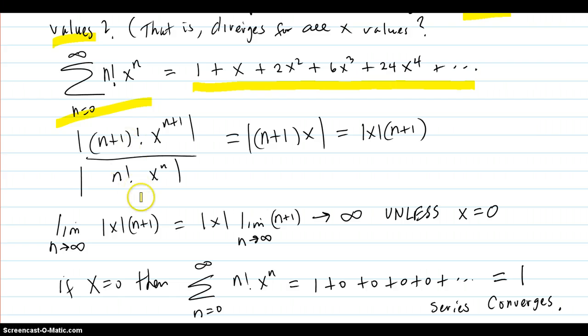Take the ratio test idea, simplifies down to this, which is equal to this. So when you take the limit, the absolute value x factors out. And this n plus one, that limit goes to infinity, no matter what x is, unless x is zero.